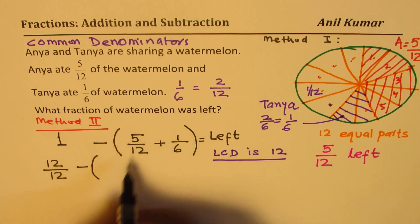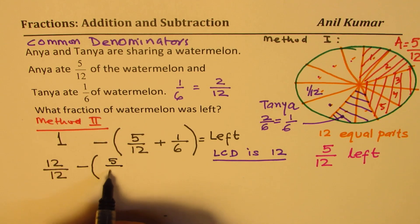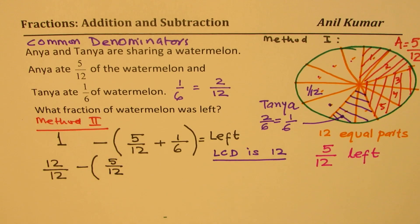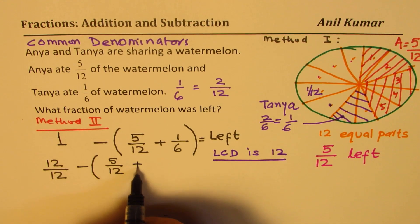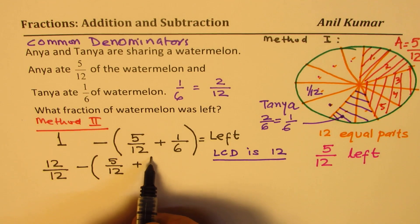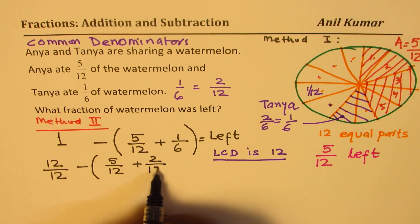So 5 out of 12 already written with common denominator 12. For 1/6th, as we did here, we will write this as 2 out of 12. Does it make sense to you?